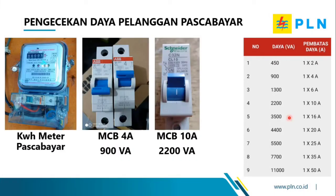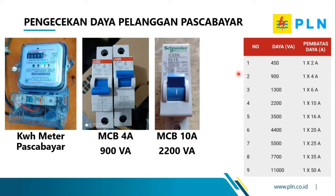Untuk cara pengecekan pada KWH meter pasca bayar — ini KWH meter yang secara umum sudah ada di rumah-rumah pelanggan. Di sini nampak di kode meter ada angka standnya dan ada MCB atau pembatas daya. Dari MCB ini kita bisa melihat rating atau pembatas daya sesuai dengan daya kontrak di PLN. Jika MCB-nya ada angka 4 atau CL4, ini adalah 4 ampere — CL artinya current limit atau pembatas arus.